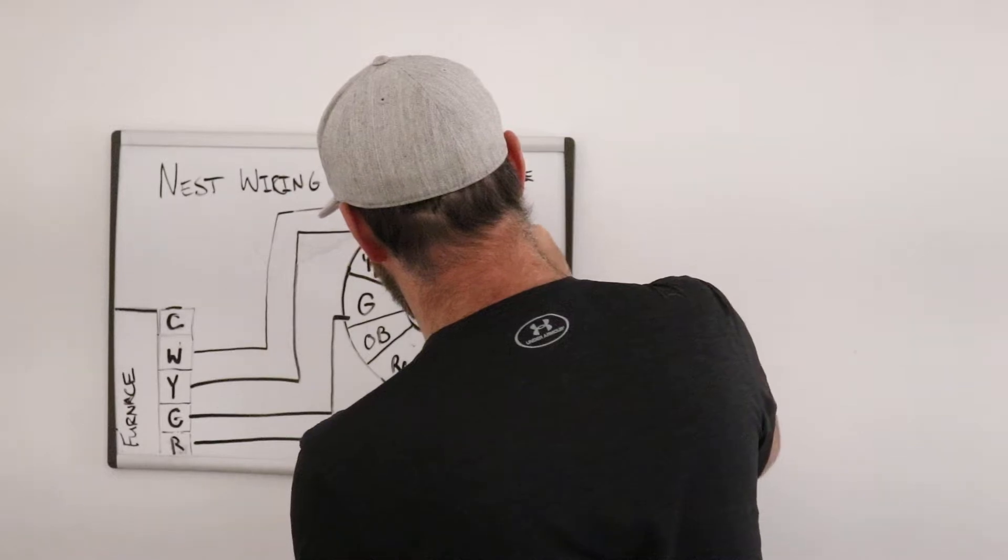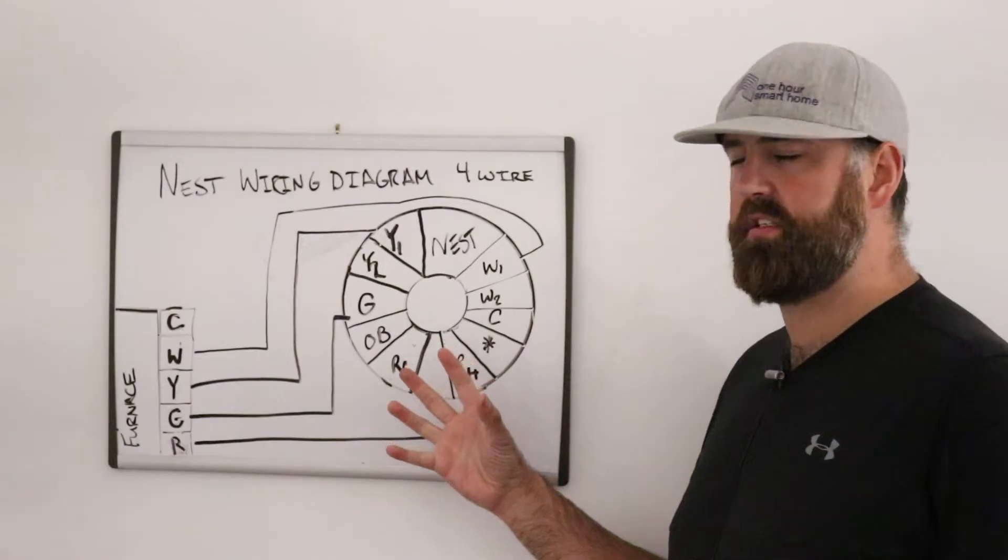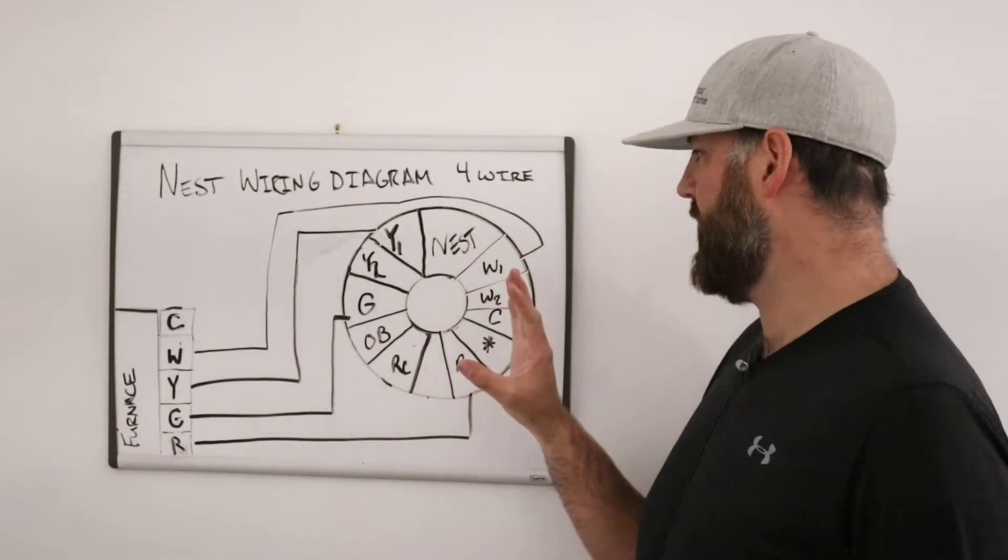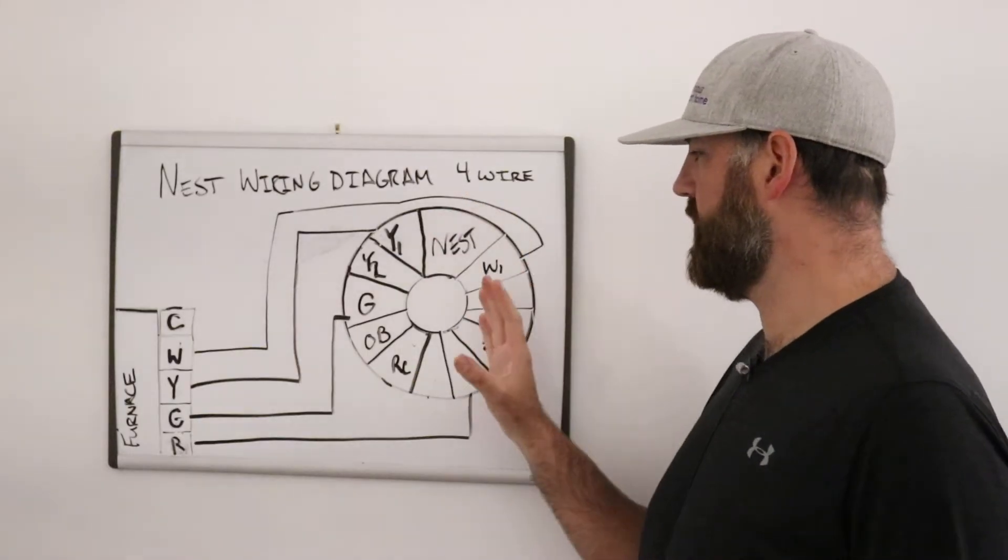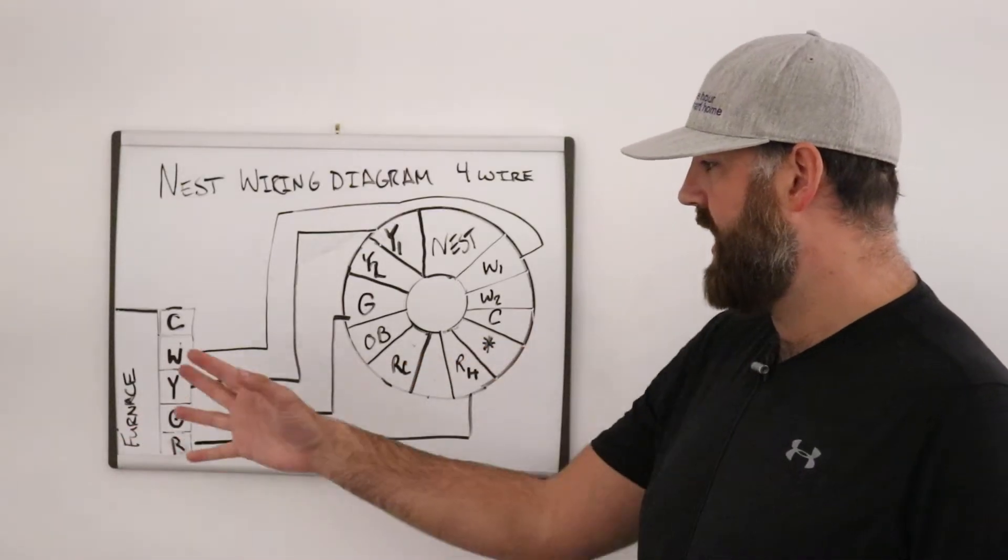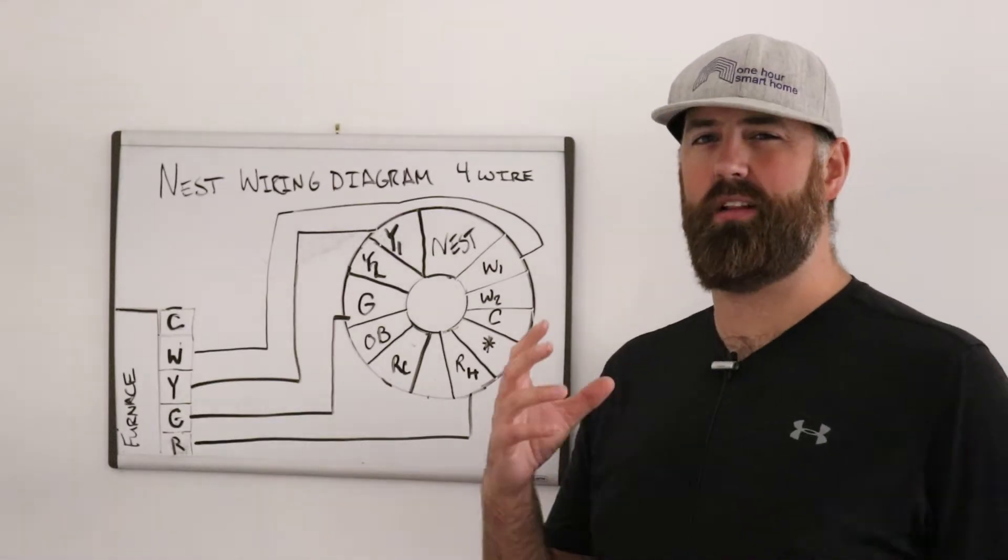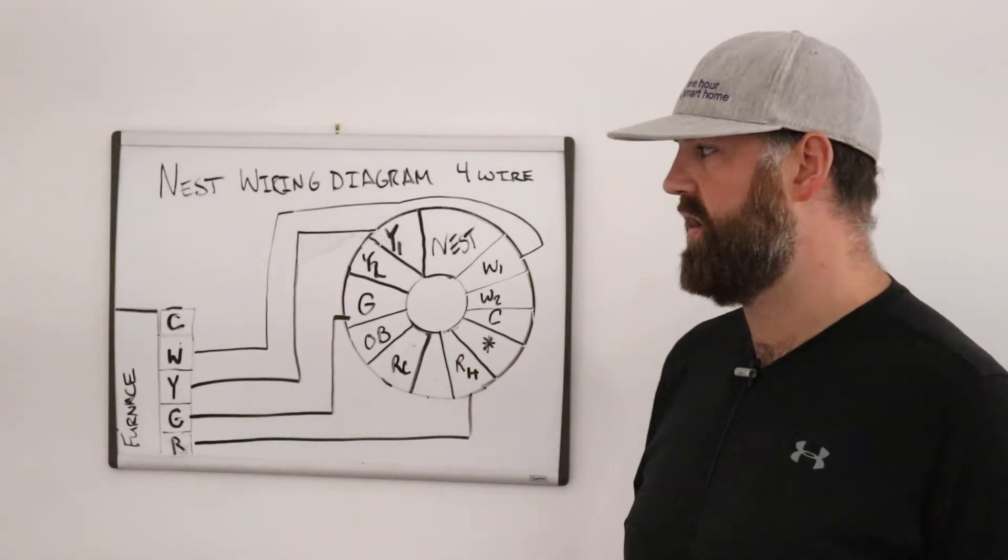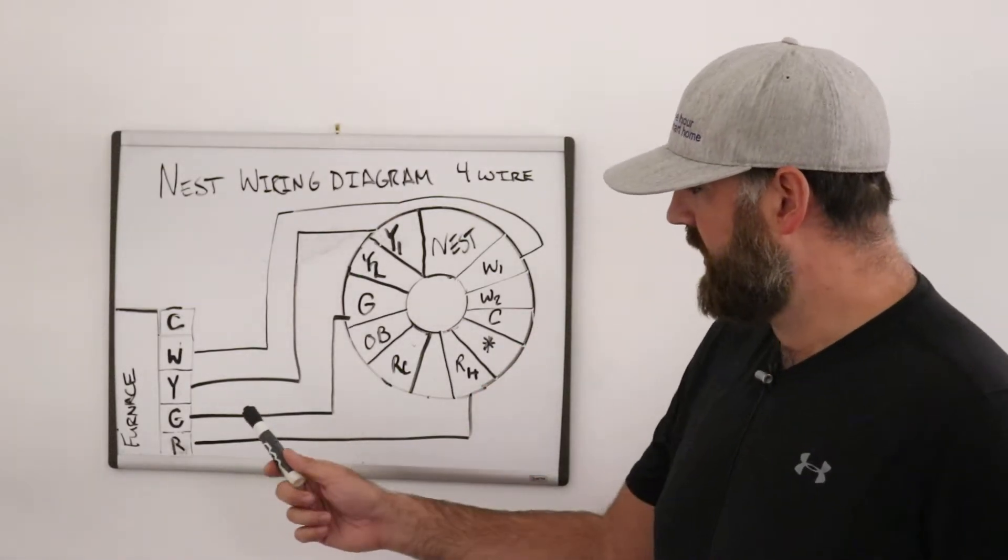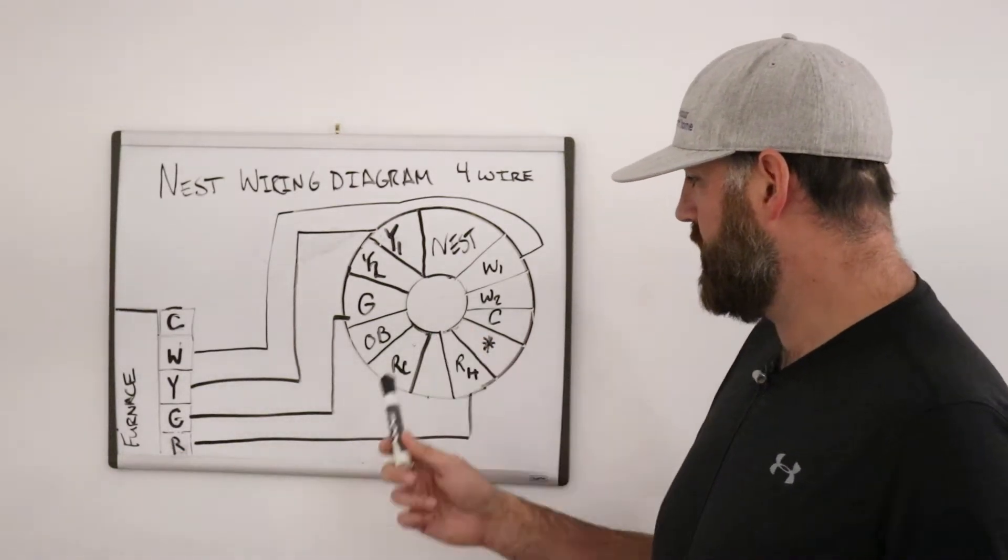This right here represents our Nest. If you were to take off your Nest or look behind the cover or when you open the box there is a base plate. On that base plate you have all these different wiring terminals. Over here we've represented our furnace and then on the side we've represented what is called a terminal block which is an electronic circuit inside of the furnace. For your furnace to work what happens is you have a connection between the terminal block and your thermostat.